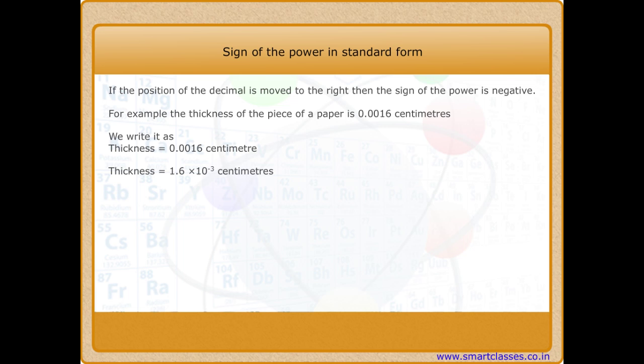Here, the decimal is moved 3 places to the right. Thus, we write negative 3 in the power.